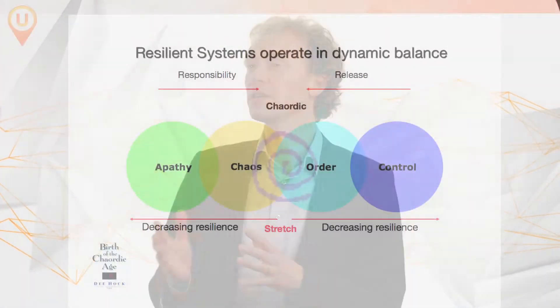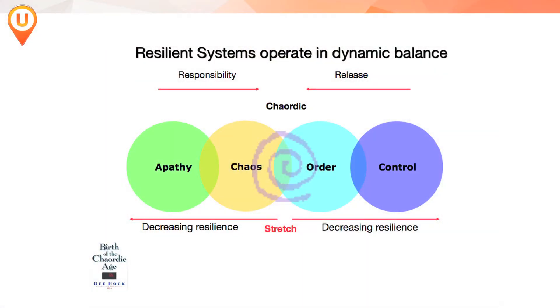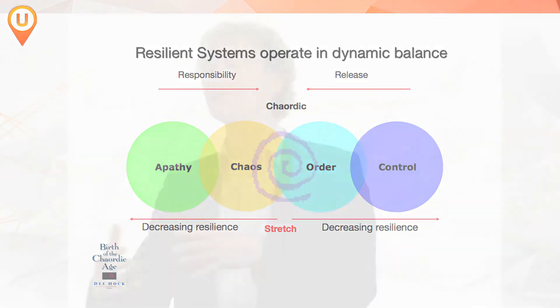If you swing too much to one side, for example to order, then you get control. And that can be very suffocating in the organization — where everything is trying to be predicted, where you're trying to check on everybody to make sure they're doing the right thing, and there's no space for people's own initiative and the kind of self-organization that we need, particularly in rapidly changing times.